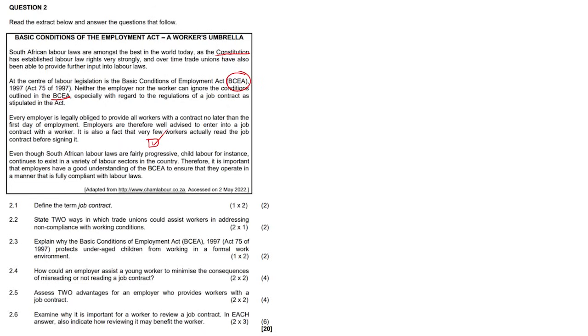Question 2.1: Define the term job contract. A contract in general is a legally binding agreement between the employer and the worker.